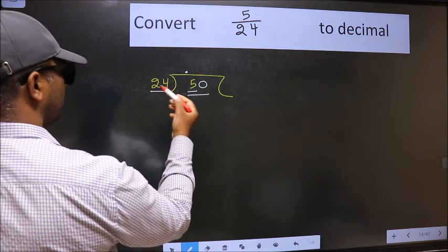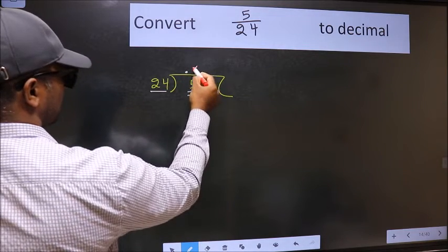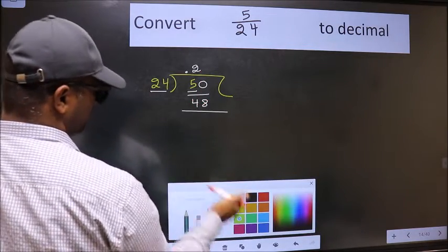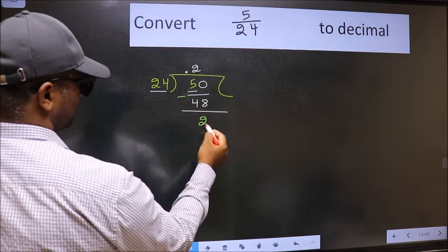A number close to 50 in 24 table is 24 to 48. Now we should subtract. We get 2.